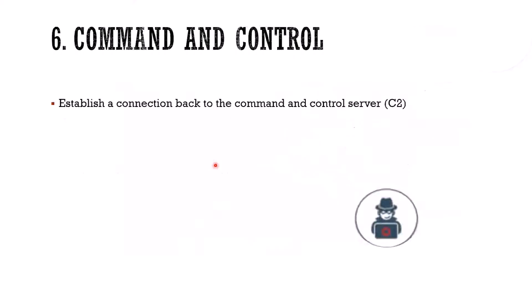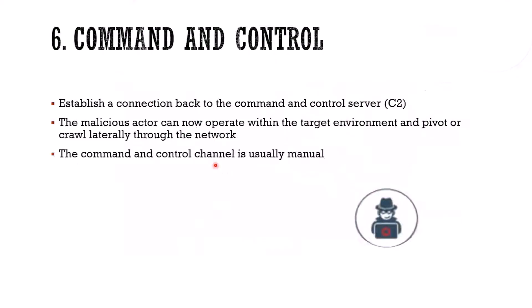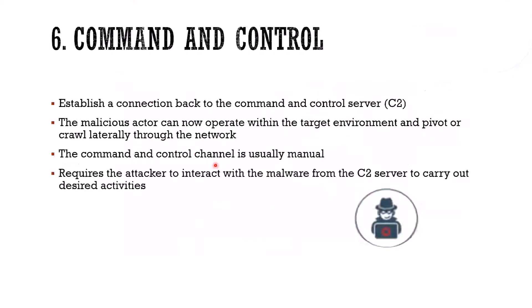Now that we're firmly entrenched in our target, it's time to do command and control. Let's establish a connection back to the command and control server. We've got our malware in there — maybe it's a bot — and we want it to come back to us past the firewall and get instructions on a regular basis. As the malicious actor, we can operate within the target environment and pivot or crawl through the network to find other targets within that private network. The command and control channel is usually manual — the attacker will have to interact with the malware from the C2 server to carry out the desired activities.